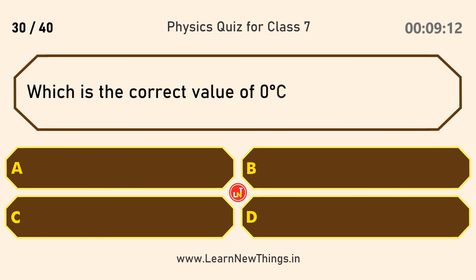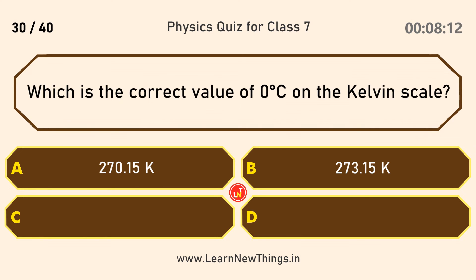Which is the correct value of zero degrees Celsius on the Kelvin scale? 273.15 Kelvin.